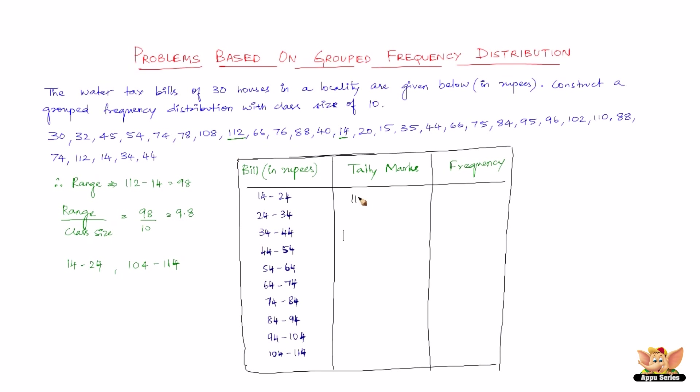We get four vertical bars in the group 14 to 24. Then we get two in the second one. Then we get three from 34 to 44, another three between 44 and 54, one between 54 and 64, two between 64 and 74, five between 74 and 84, three between 84 and 94, and another three between 94 and 104.